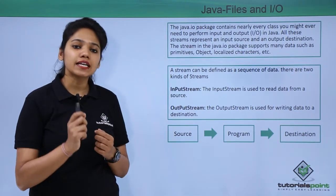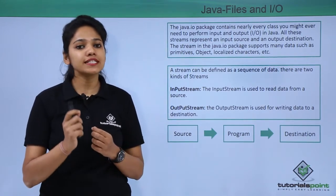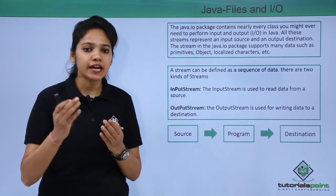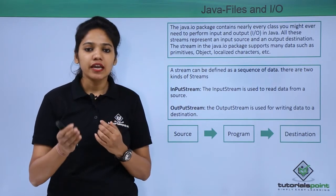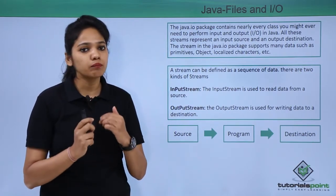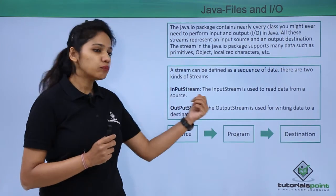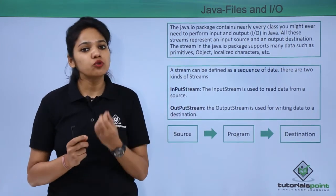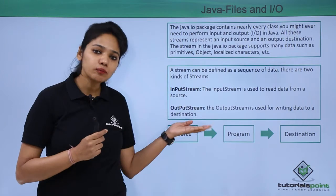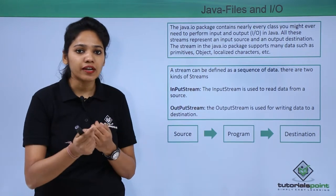The Java.io package provides certain operations to perform on these kinds of data. Those operations are input and output operations, where the input stream is used to read data from a file and the output stream is used to write data to a file.